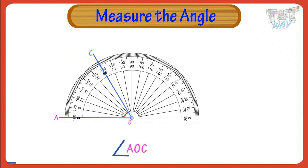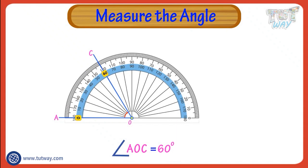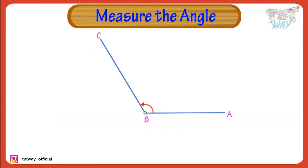Here is an angle we have to measure. To measure the size of angle AOC, place the protractor over the angle so that the center of the protractor is directly over the angle's vertex, that is O, and the baseline of the protractor is along the arm OA of the angle. We use the inner scale to measure the angle AOC, as the arm AO passes through the zero of the inner scale.